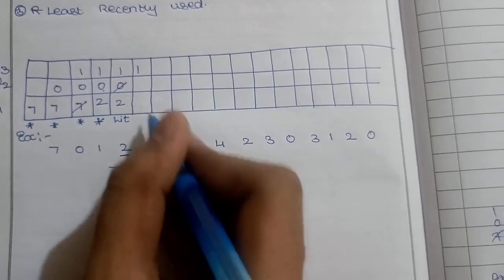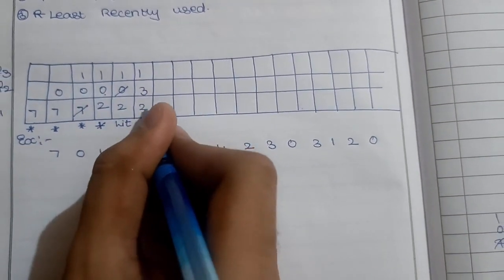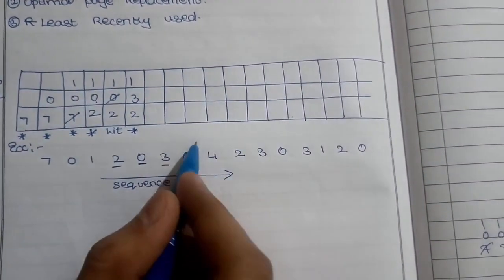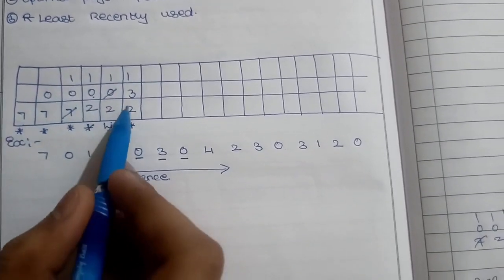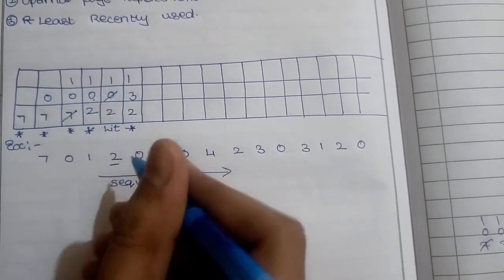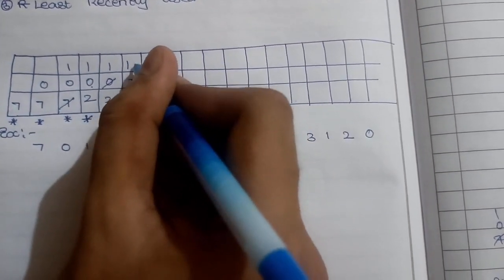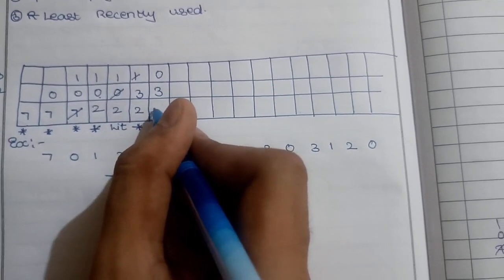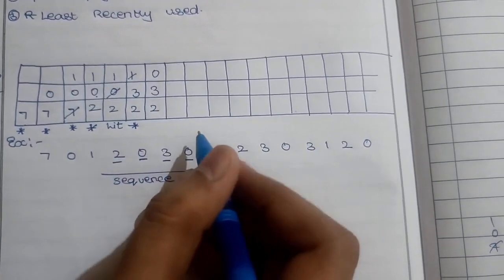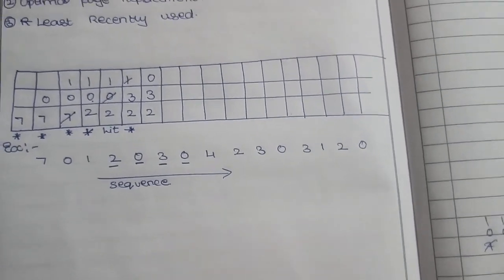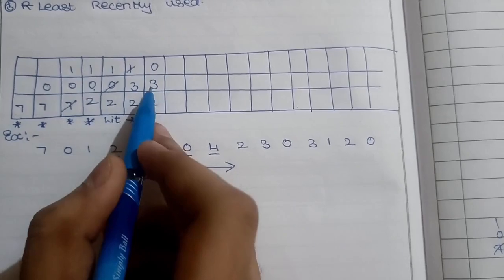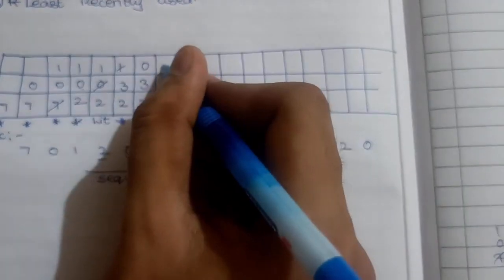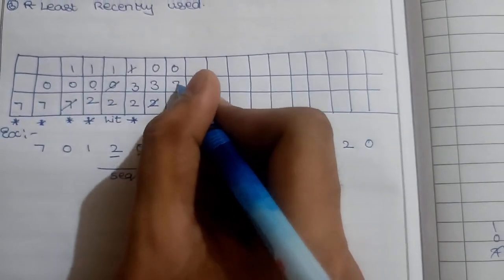Seven is already there, so 0 makes it a fault. Since 1 repeats more times, I'll replace 1 with 0, 3, 2. Next is 4. Don't get confused - 2 repeats in that frame, so I'll delete 2. With FIFO it's quite easy compared to other methods.